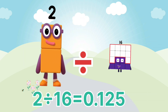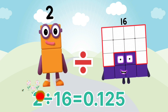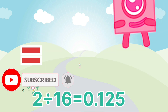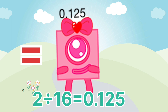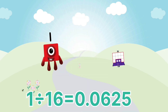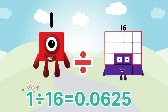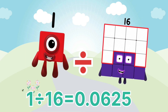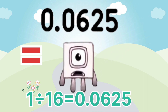2 divided by 16 equals 0.125. 1 divided by 16 equals 0.0625.